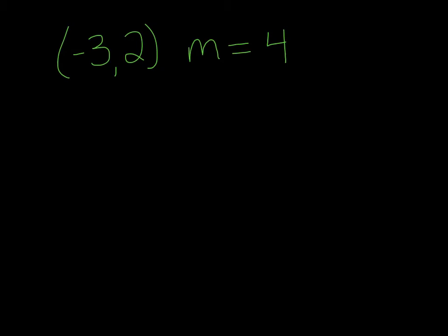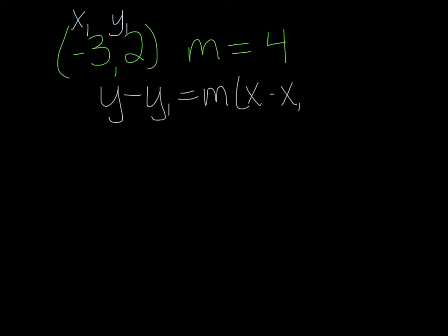First one. First thing I'm going to do is label: this is x1 and this is y1. We only have one point — remember x always comes before y. On our point-slope form, this is our equation — this will be given to you, but you just need to know how to use it. Now I'm going to plug in what I know. This y is always going to stay. This y1 is right here — y1 is 2, so I'm going to plug in a 2.